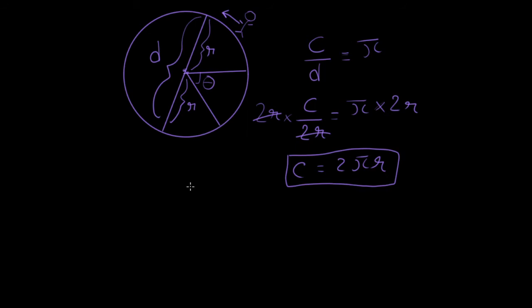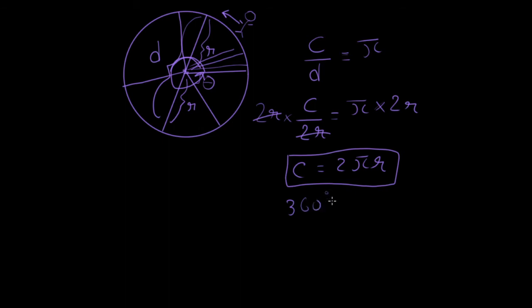We know about degrees — going all around a circle is 360 degrees. This part may be one degree, two degrees, three degrees. A straight line across would be 180 degrees, and going all the way around is 360 degrees. Since the circumference represents going all around the circle, we can write 360 degrees equals 2πr.